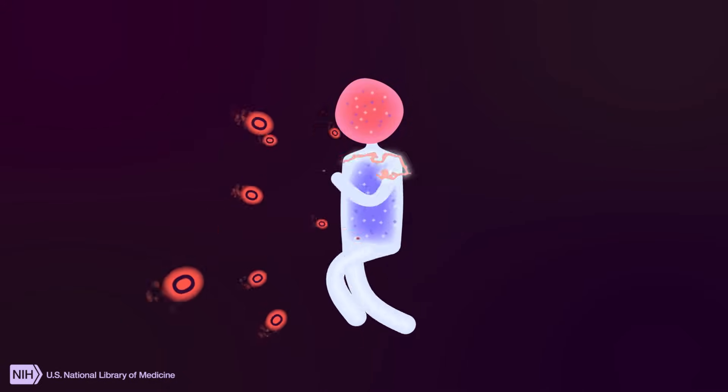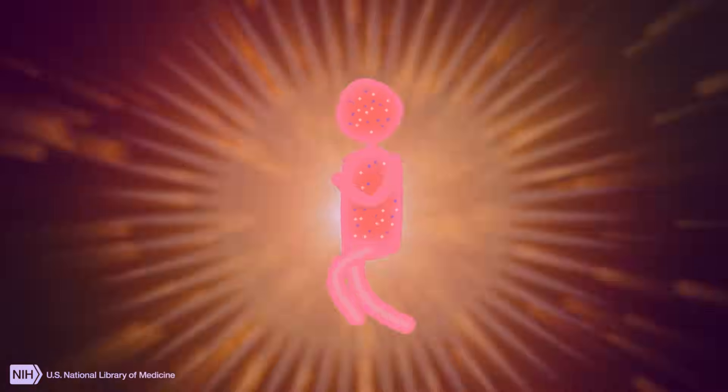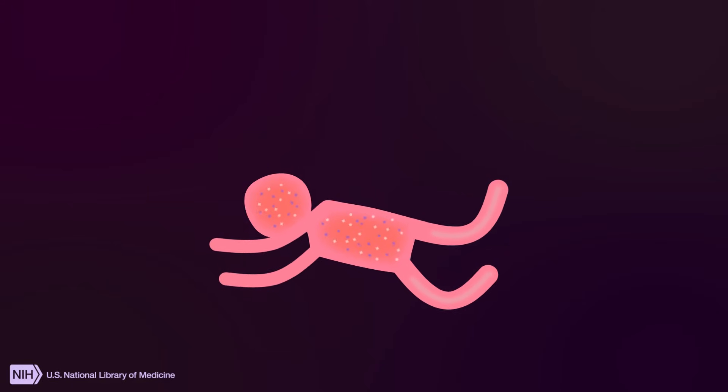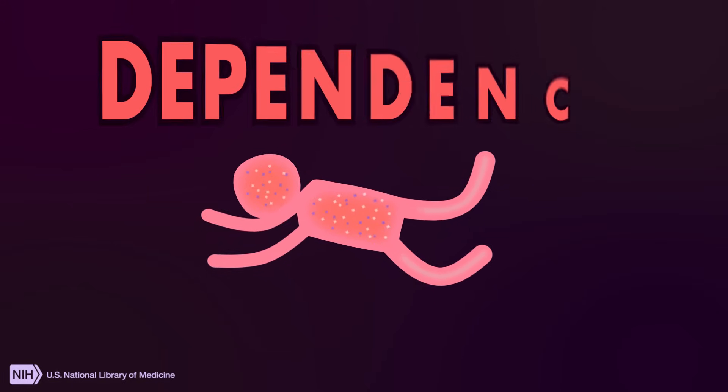But opioid drugs, like prescription pain medications or heroin, have much stronger opioid effects, and they're more dangerous. Over time, frequent opioid use makes the body dependent on the drugs.